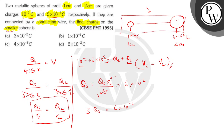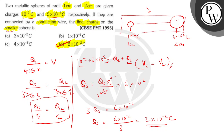So q_small is equal to 6 into 10 power minus 2 divided by 3, which gives us 2 into 10 power minus 2 coulombs. The answer for this question is option D: 2 into 10 power minus 2 coulombs. I hope you understood how I solved this question. Thank you very much.